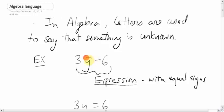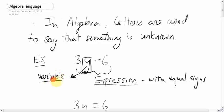The letter y can be given a name because it changes — it could be anything. We don't know what it is right now. So because it changes, we call that letter a variable. All letters are variables; they vary. They could be anything. Expressions are just stating something — it's like saying 'I had eggs for breakfast.' I don't need you to answer a question; I'm just telling you. 3y minus 6 — I'm not telling you to do anything with that. That's an expression.